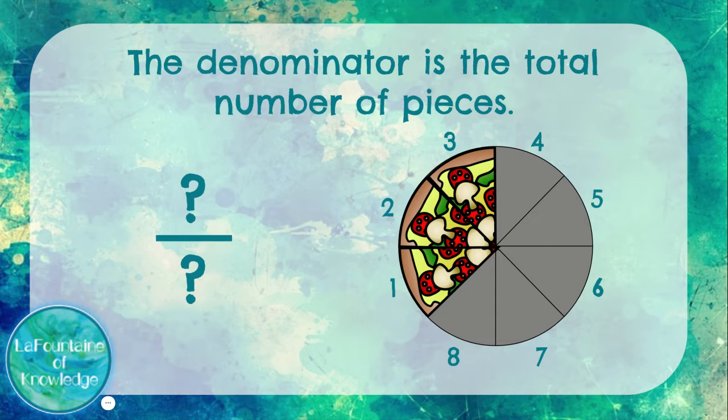The denominator is the total number of pieces. For us, that's eight because our pizza was cut into eight slices.